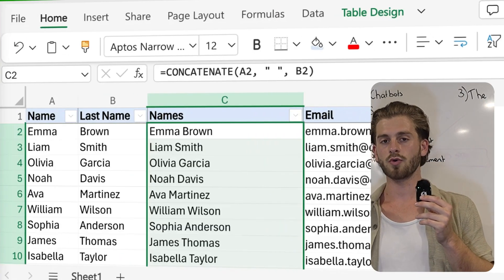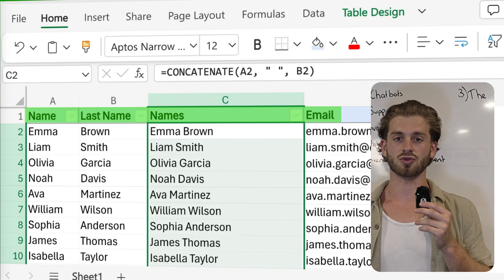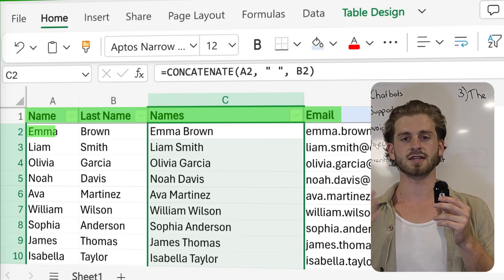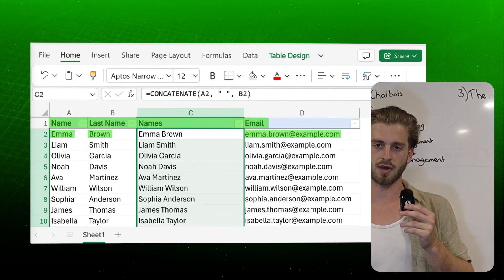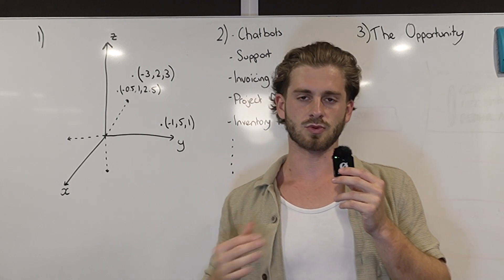So your first row has got your headings, for example if you're storing users you'd have maybe first name, last name, date of birth and email, and then you just populate that list with all the data.